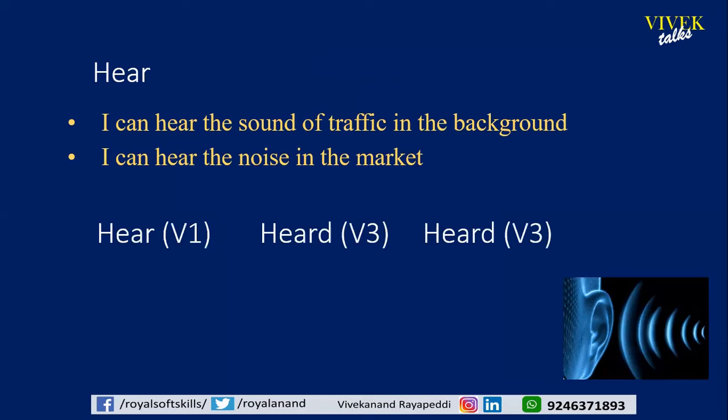Regarding tenses: the present or infinitive form V1 is 'hear.' Past form V2 is 'heard' — H-E-A-R-D. So hear, heard, heard. Whereas for 'listen,' V1, V2, V3 forms are: listen, listened, listened. So 'listen' is a regular verb and 'hear' is an irregular verb. If just by adding -ED you get the V2 and V3 form, it's a regular verb. If V2 and V3 are different, it's an irregular verb.